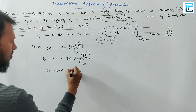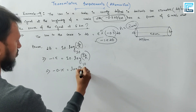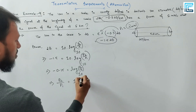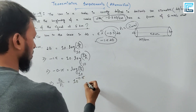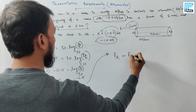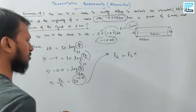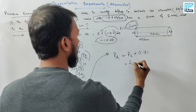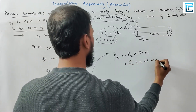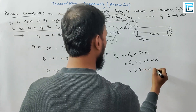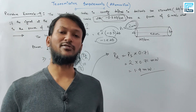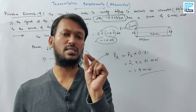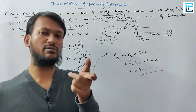For example, if the decibel value is -0.15, then -0.15 = 10 log₁₀ (P2 / P1). Solving, P2/P1 = 10^(-0.015), which gives P2 ≈ 0.71 × P1. So if P1 is 2 mW, then P2 = 2 × 0.71 = 1.42 mW.